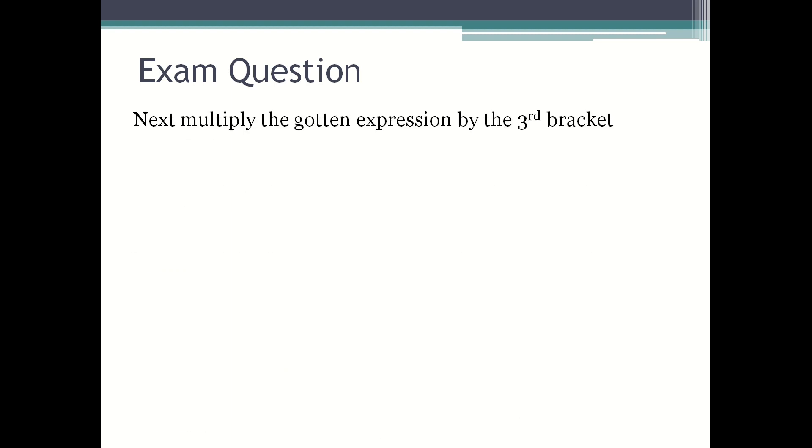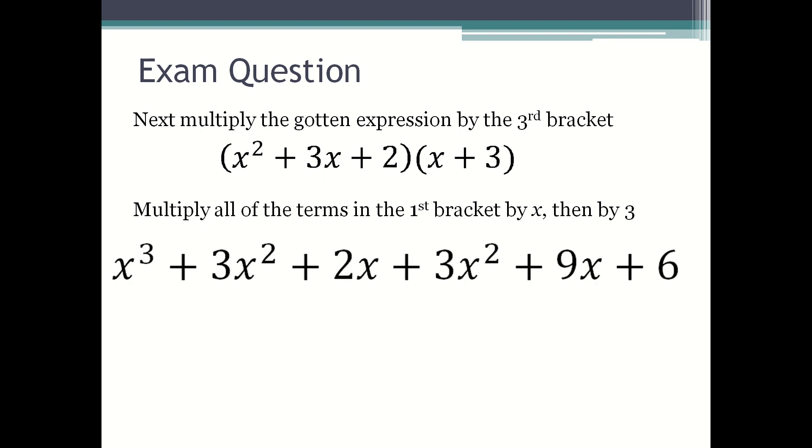Next, you multiply the gotten expression by the third bracket. So in the first bracket you have (x² + 3x + 2)(x + 3). You multiply all the terms in the first bracket by x, then by 3. So when you multiply the terms by x first, you get x³ + 3x² + 2x.